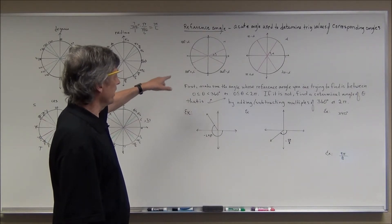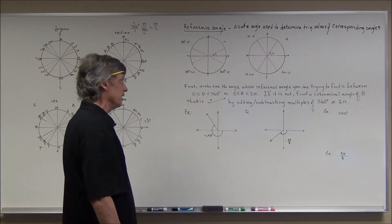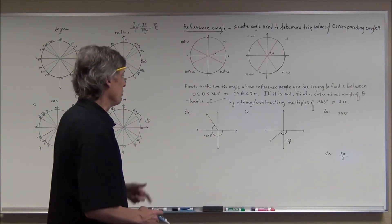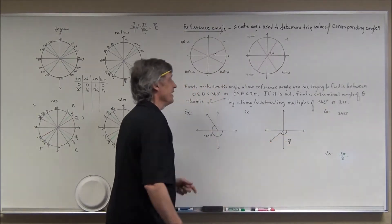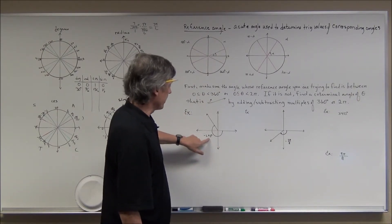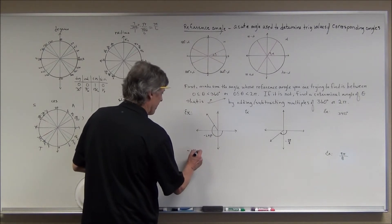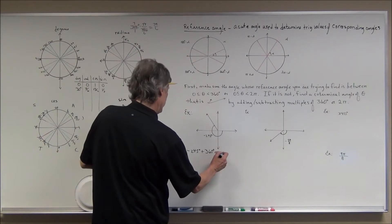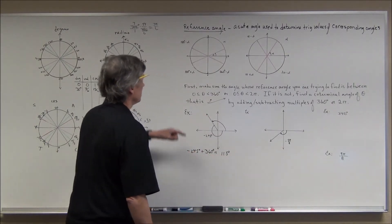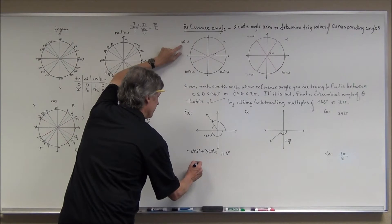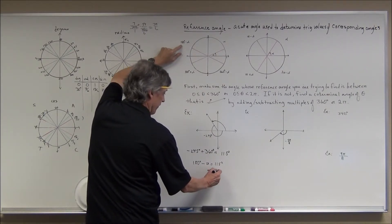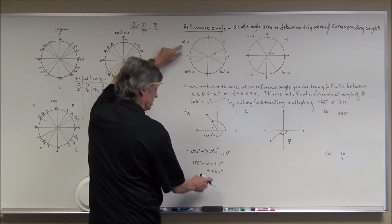When finding a reference angle, make sure the given angle is between 0° and 360° (or 0 and 2π). If it's negative or very large, add or subtract multiples of 360° or 2π. For example, −245° is negative, so add 360°: −245 + 360 = 115°. That's in the second quadrant, where 180° − α = 115°. Solving: α = 65°. That's the reference angle.